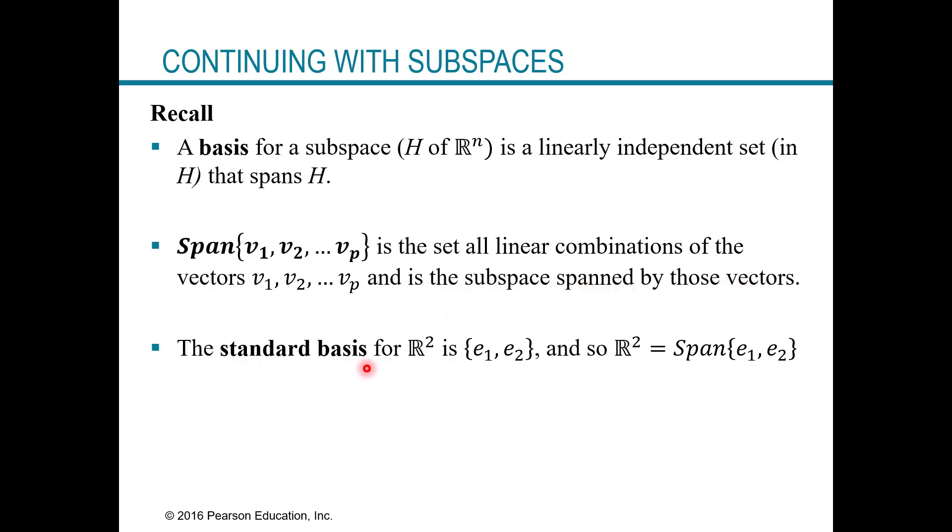And then the standard basis, and this could be for any R, so it could be like R3, R4, Rn, is just your vectors from your, think of it like an identity matrix. I'm just saying for R2, the standard basis is the set containing e1 and e2. So if you visualize a 2 by 2 matrix, this e1 would be column 1, where it would be entry 1, 0, and then e2 would be entry 0, 1. And so what I want you to know, or notice, is that R2 is equal to the span of those two vectors. Basically what this is saying is you can generate all of two-dimensional space as linear combinations of those two vectors.